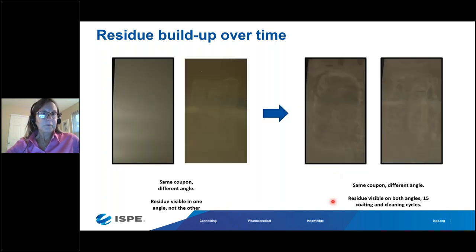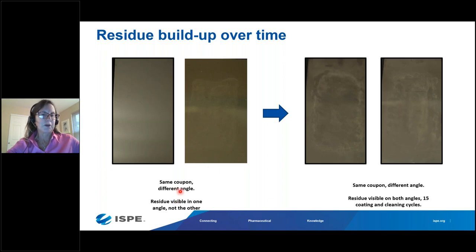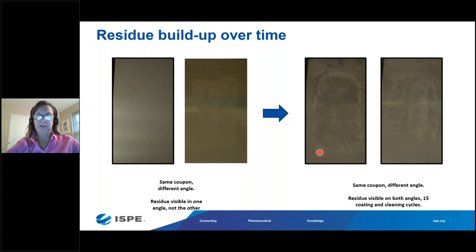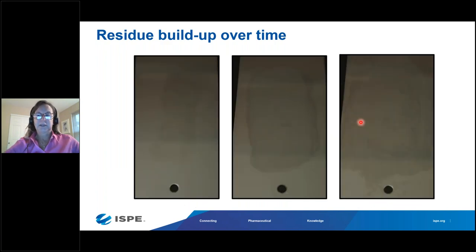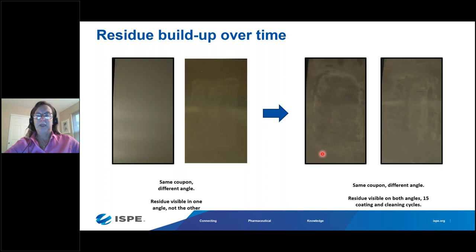Further illustration with the same coupon under different viewing angles: after one cleaning cycle, residue may not be visible from one angle but visible from another, mimicking the difficulty of detecting residue inside process equipment. After 15 cycles, residue was visible under both angles. This demonstrates the power of coupon studies — they are also useful for screening new soils to determine if an existing cleaning program can handle them.